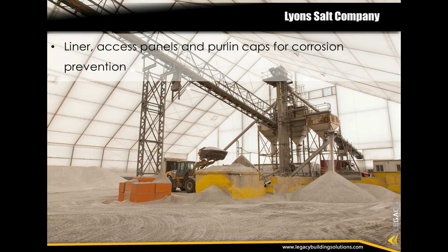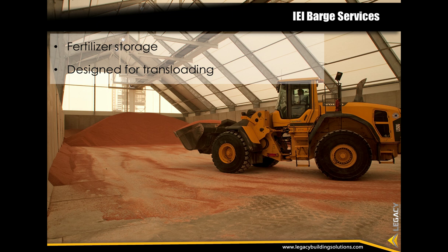A salt mine in Kansas chose fabric as the only option because salt is very corrosive and would quickly destroy steel panels. After working with the building owner to add advanced corrosion-fighting features including a liner, ventilation system, access panels, and purlin caps, Legacy was able to offer an enhanced warranty. This building is also connected to an existing fabric structure. The fertilizer storage building for IEI Barge Services is a great example of a design-assist project, where Legacy's team first created computer-generated models of six fertilizer products and then designed the building to fit around the piles. The lean-tos provide a drive path with access to all six bins for transloading, and the structure receives and loads product via rail, truck, and barge with a conveyor and overhead doors.